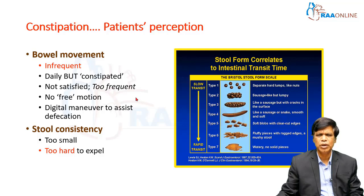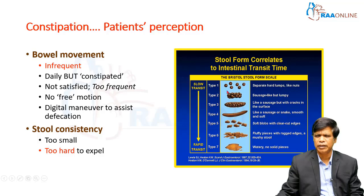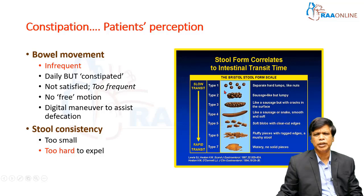So it is very important to spend time and ask the patient to elaborate what they mean by constipation. If you look at the Bristol stool chart from type 1 to type 7, the colonic transit time is reduced. When there is slow transit, you have more type 1 pellet and lumpy sausage-like stools. As you approach type 4, you approach normal stools. So when you mention constipation, you are more dealing with type 1 to type 3 stools.